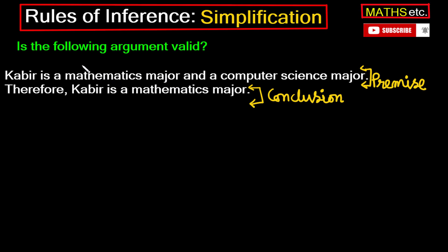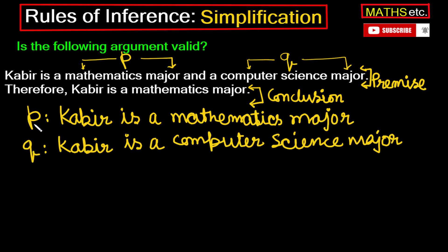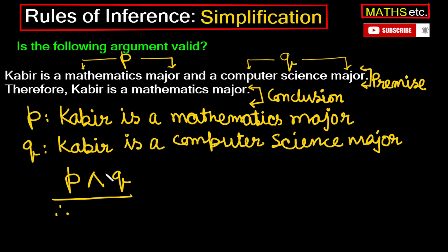Kabir is a mathematics major — is proposition ko hum represent kar rahe hain propositional variable p se. Aur Kabir is a computer science major — isko hum represent kar rahe hain propositional variable q se. Toh p represent kar raha hai proposition 'Kabir is a mathematics major', aur q represent kar raha hai 'Kabir is a computer science major'. Isko hum argument form mein likhte hain: p and q (premise), therefore p (conclusion). Yeh humare paas argument form ho gayi.